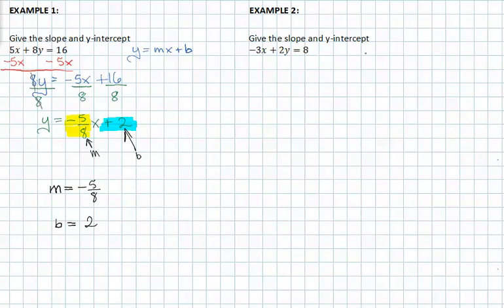Give the slope and y-intercept of negative 3x plus 2y equals eight. Again, we must first solve for y. We do this by adding 3x to both sides and we get 2y is equal to 3x plus eight.